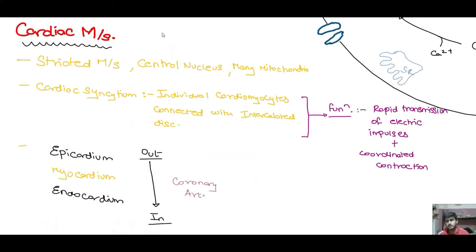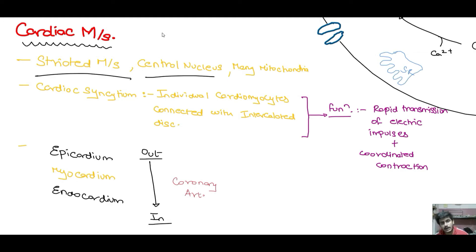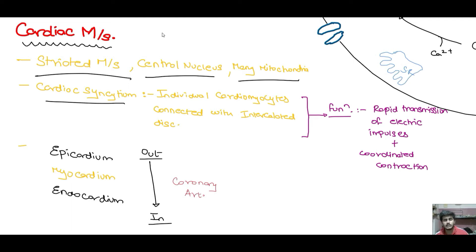Now we will talk about the last muscle fiber, which is the cardiac muscle fiber. As we have seen, cardiac muscle is a type of striated muscle which has a central nucleus and has the presence of many mitochondria. Since the heart must pump blood to the entire body, it must have high energy sources, hence many mitochondria. Then we have the cardiac syncytium — these are the individual cardiomyocytes.